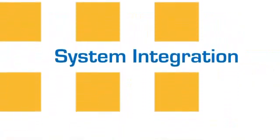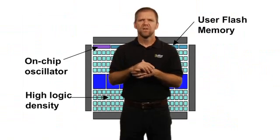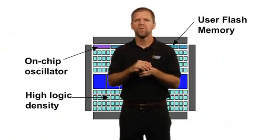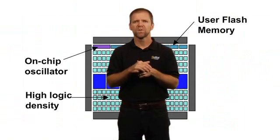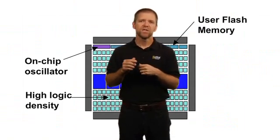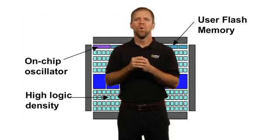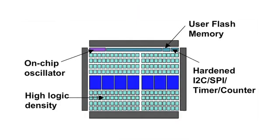Mach XO2 devices provide abundant lookup tables, embedded memory, built-in PLLs, and an on-chip oscillator. In addition, Mach XO2 devices offer up to 256 kbits of general-purpose flash memory that supports up to 100,000 write cycles and is accessible via the JTAG, I2C, and SPI interfaces, or the onboard Wishbone bus. Popular functions for system and consumer applications can be implemented on all devices without using lookup tables. These functions include I2C, SPI, and timer counters.